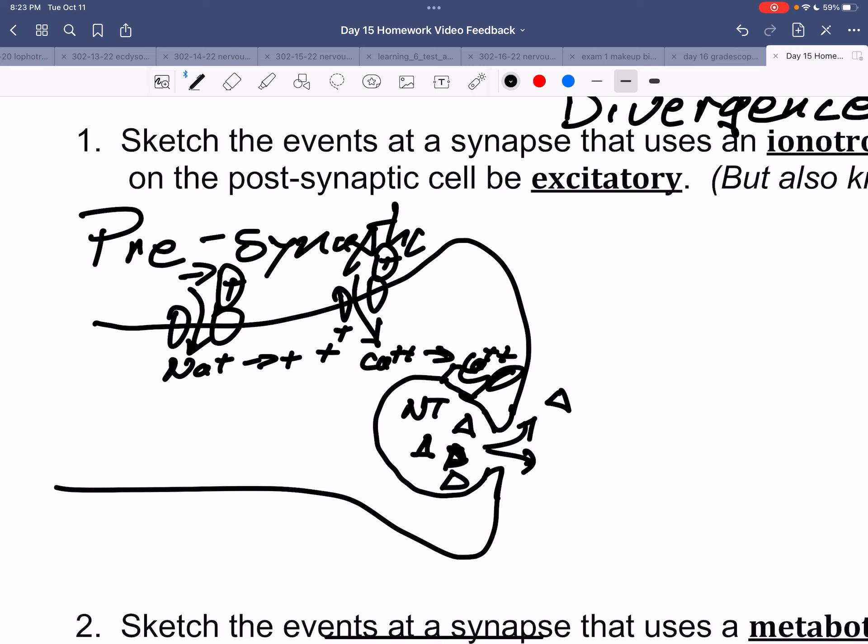In the postsynaptic cell, there are receptors that bind to the neurotransmitter. And in this case, ionotropic receptors are called ionotropic because the receptor is an ion channel. So here is our receptor, it's this whole thing.